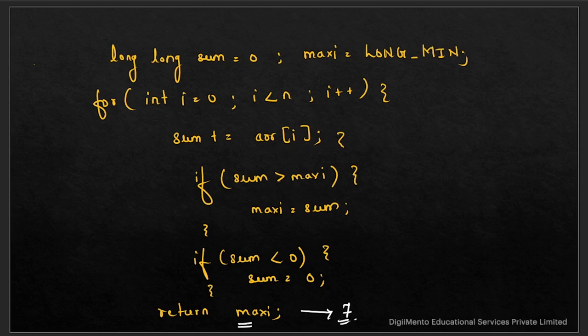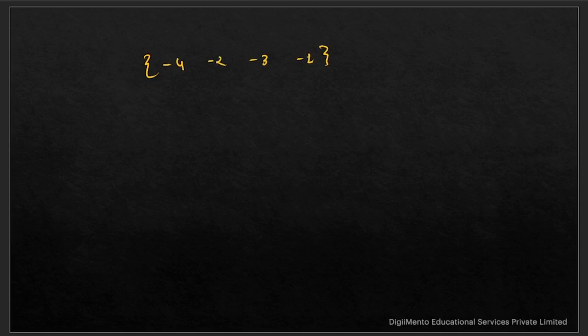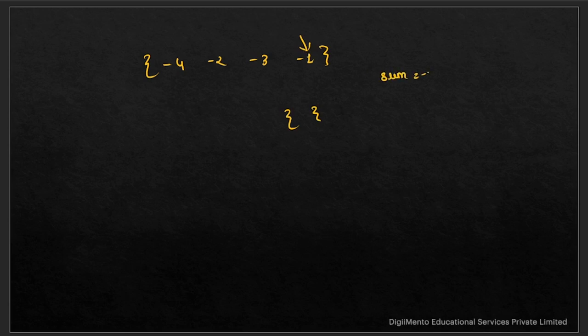One variation: if asked to handle an all-negative array like [-4, -2, -3, -1], no subarray gives a positive sum. In that case, we return an empty subarray. Whenever the max sum is still negative, we return the empty array as required.